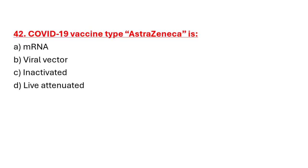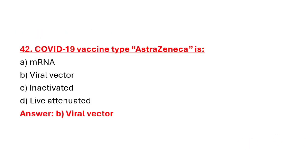Question 42: COVID-19 vaccine type AstraZeneca is. Option A: mRNA. Option B: Viral vector. Option C: Inactivated. Option D: Live attenuated. Correct answer is Option B: Viral vector.